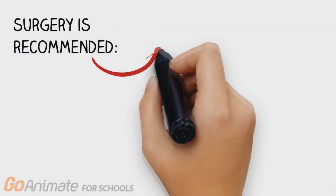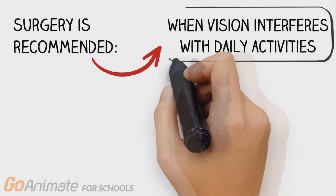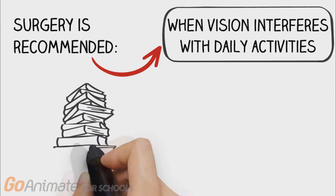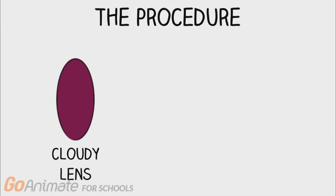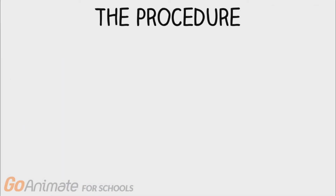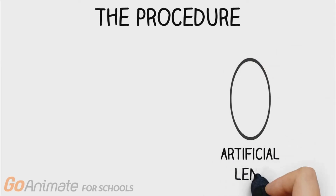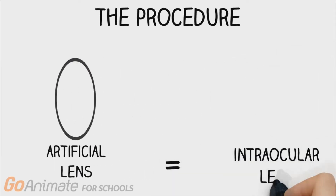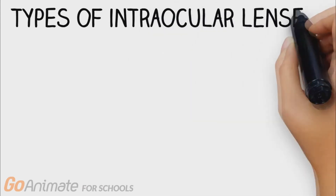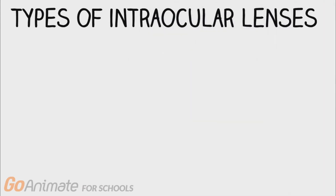Surgery is recommended once your vision interferes with daily activities such as reading and driving. In this procedure, the cloudy lens is removed and replaced with an artificial lens, also known as an intraocular lens, that sits in the natural lens capsule.